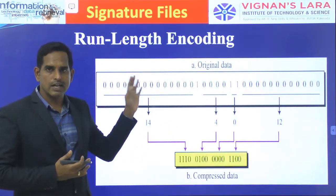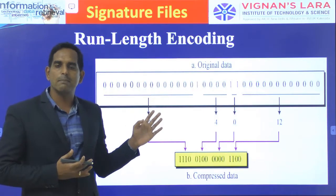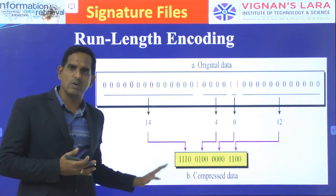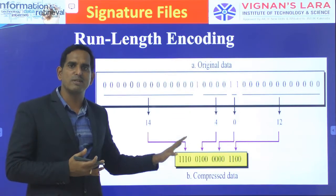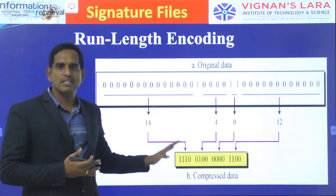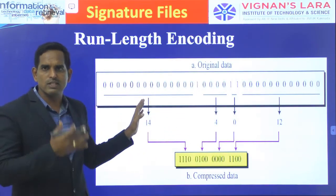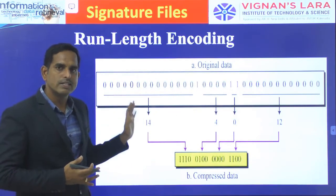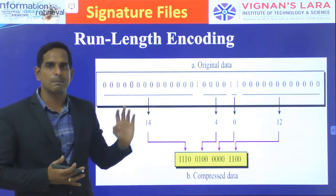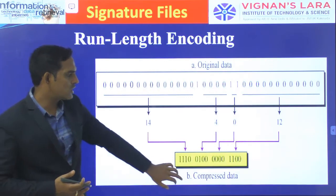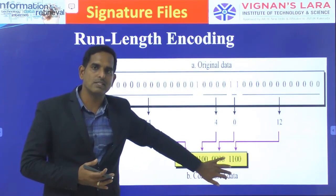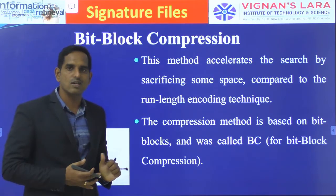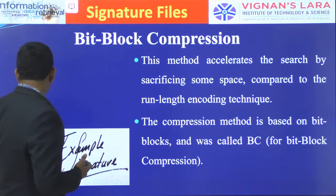Run-length encoding provides better space overhead — it takes less space — but whatever search you try to do will take more time compared to your sequential signature file and other compressed versions. The more important compressed versions for sequential signature files are the bit block compression methods.